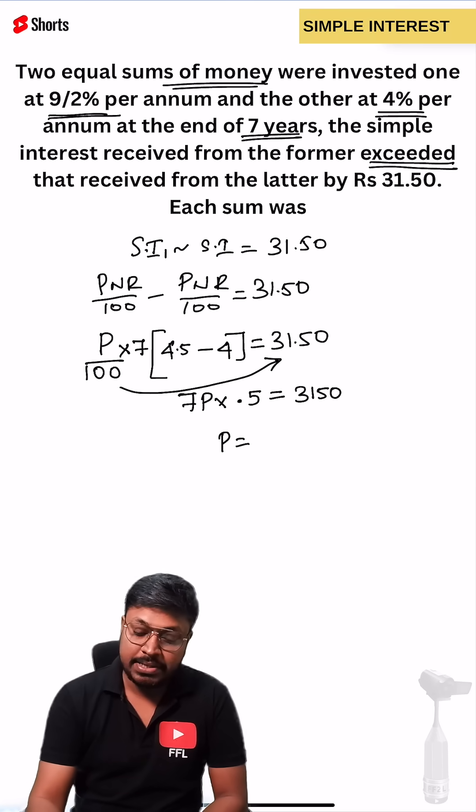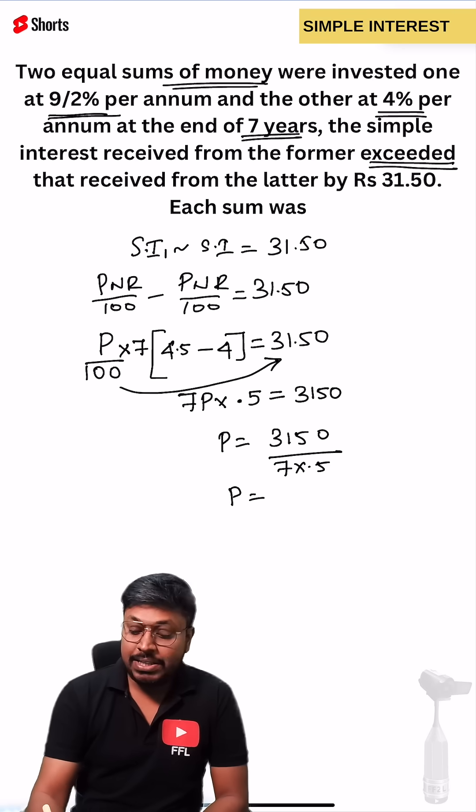Principal equals 3150 divided by 7 into 0.5. 7 into 0.5 is 3.5. When you multiply this, this will be 900.